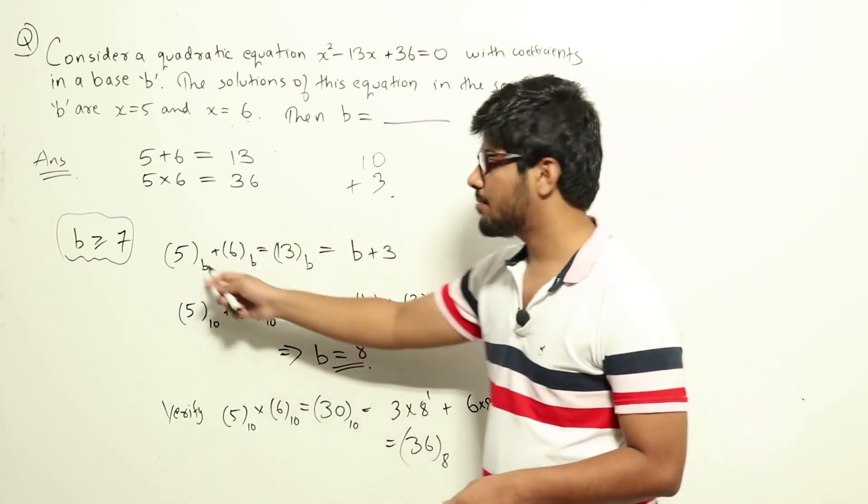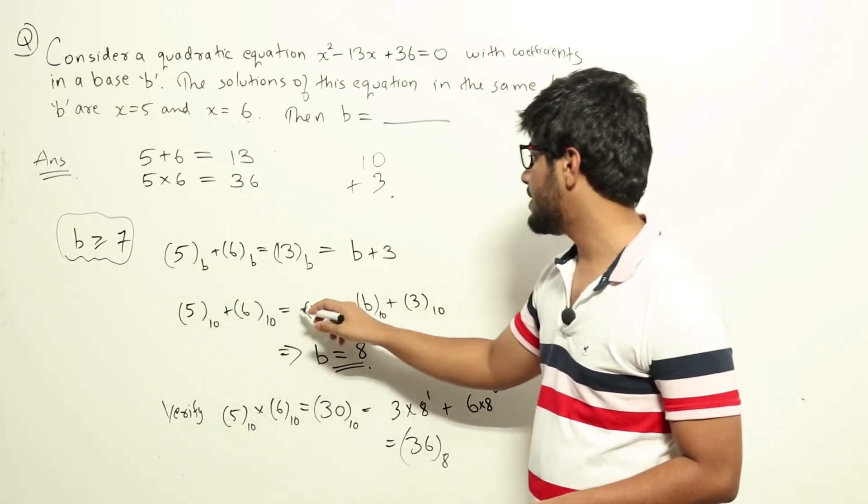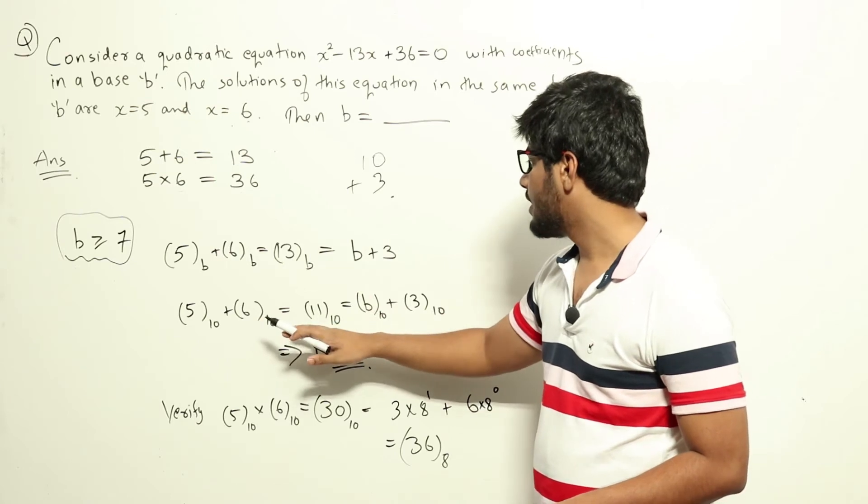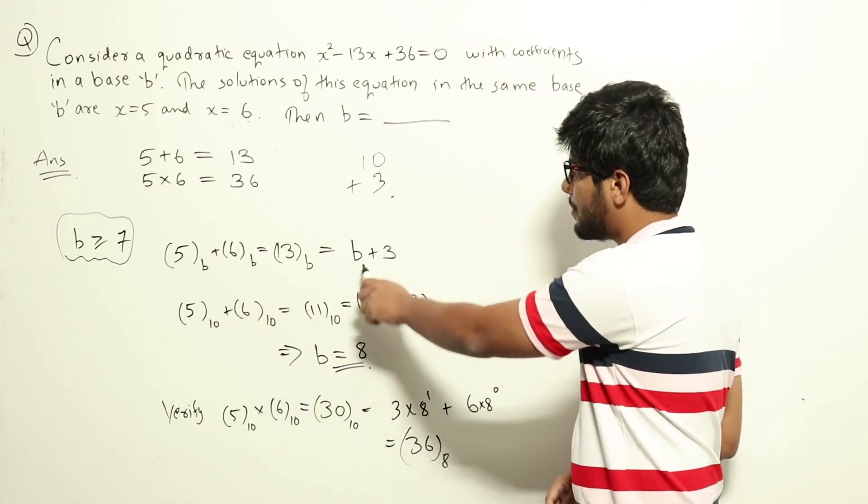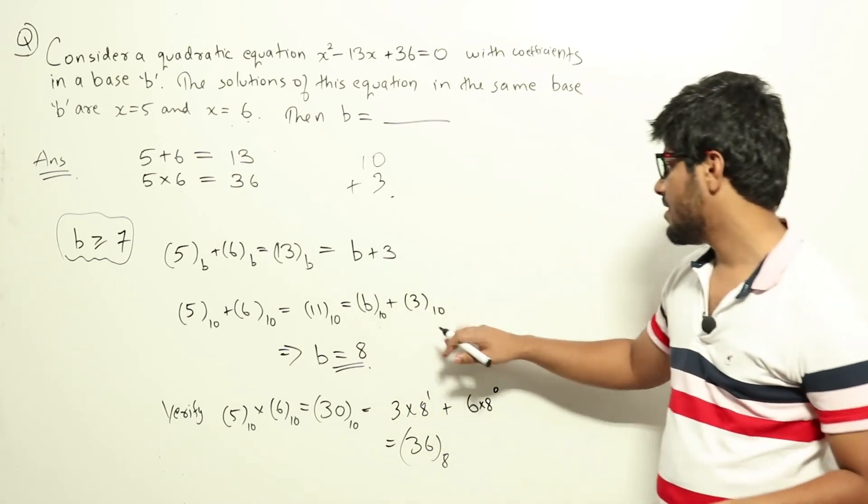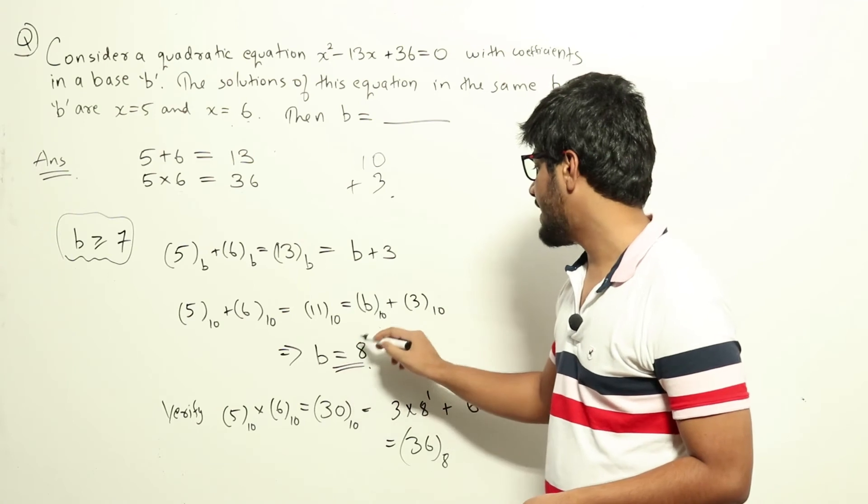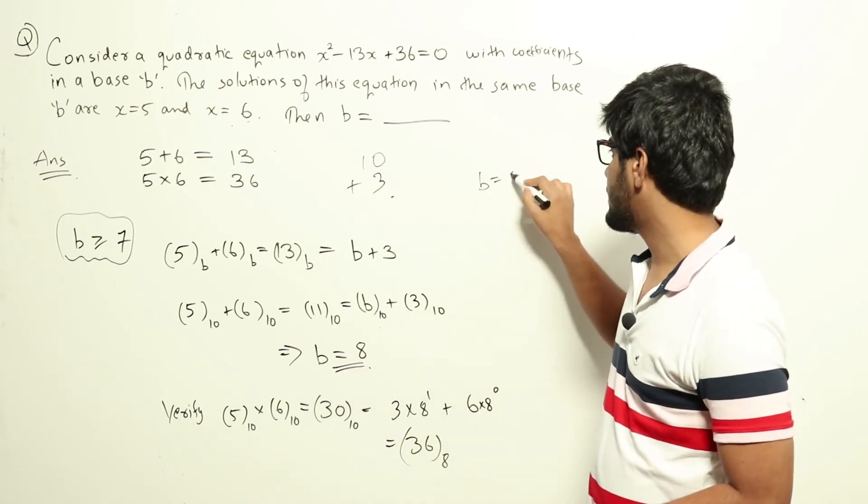Now if I write it in base 10, I can write that 5 plus 6 will be equal to 11. 5 plus 6 is 11 in base 10. That is equal to B in base 10 plus 3 in base 10. Which means that B will be 8 in base 10. So now we got that base B will be equal to 8.